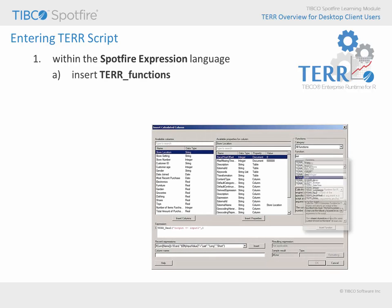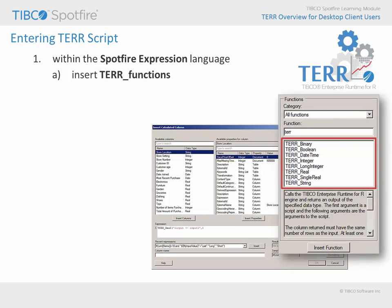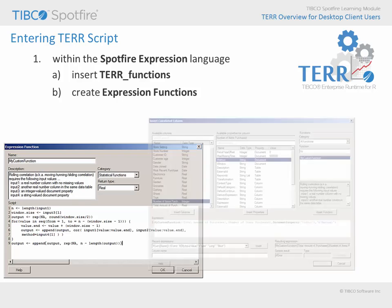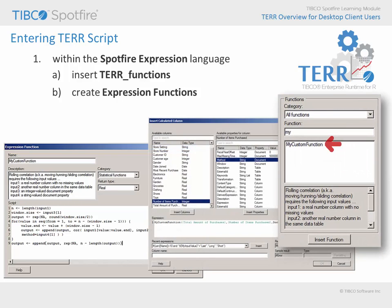You can use one of the TERR functions which are available in the various expressions dialogues. Once you have inserted the function which represents the data type for the expected output from your script, the function can be edited to supply the necessary input variables and arguments. The other option is to create an expression function in a separate dialogue where you can enter all of the script instructions as well as a detailed description for your new custom function. Your custom function then becomes a new function option within the various expressions dialogues, making expression functions a good option for more complex scripts or scripts which you wish to reuse throughout an analysis document.